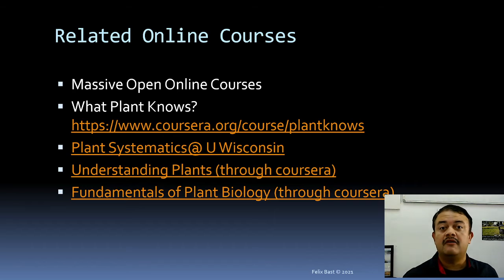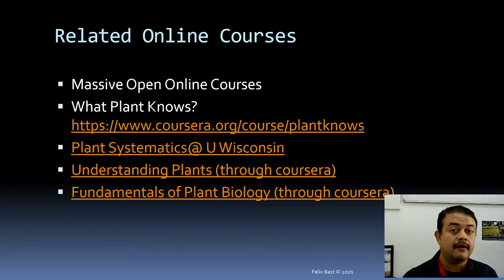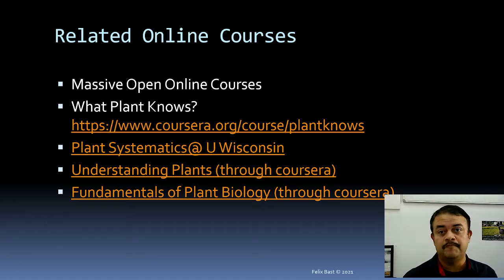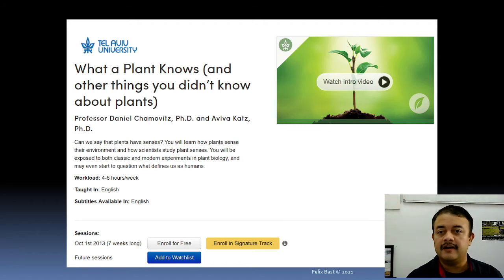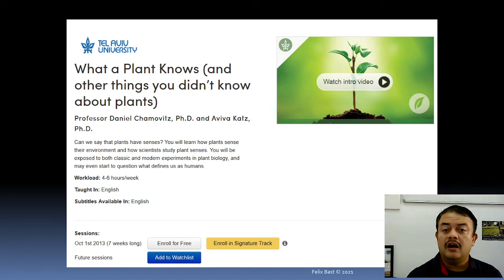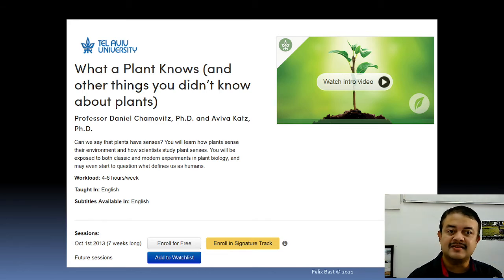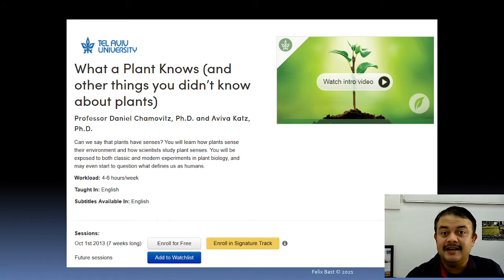There are several online courses I suggest. What a Plant Knows is a very good course I took long ago. Also, Plant Systematics at the University of Wisconsin, Understanding Plants through Coursera, and Fundamentals of Plant Biology through Coursera. All these are MOOCs — massive open online courses, completely free. Another favorite is a course by Tel Aviv University in Israel: What a Plant Knows — about the various attributes and mysteries of plants. It's a very good course.